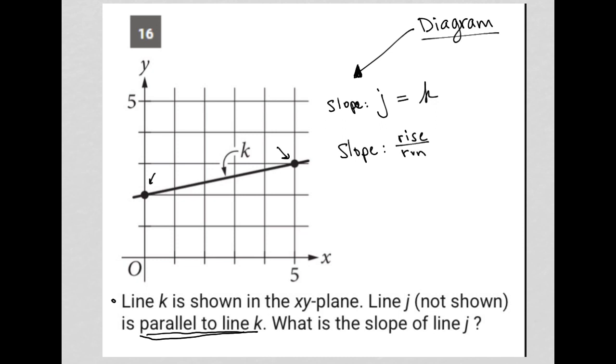I'm going to switch my color here to red. In terms of rising, I'm rising from this point up one unit, and I'm running one, two, three, four, five units to the right to get to the next point, which means my rise over run is one fifth.